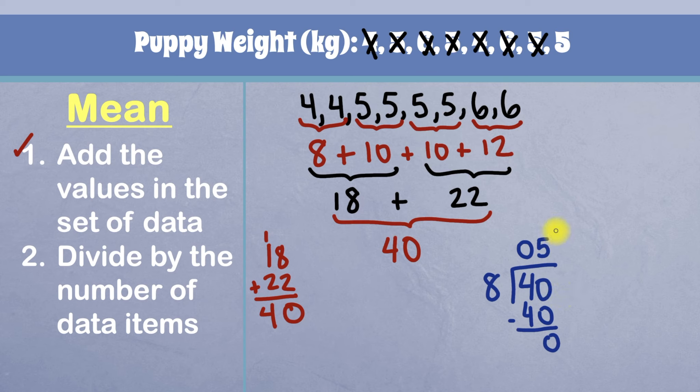And so we got our final answer for the mean as being five. And what is it we're talking about? We're talking about puppy weight. So we can say the mean for the weight of puppies is five kilograms. And we know it's kilograms because the unit of measure is right here.